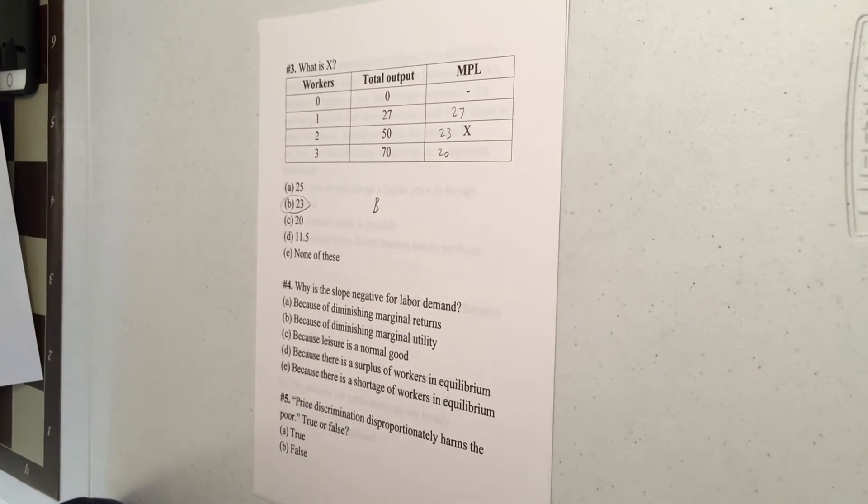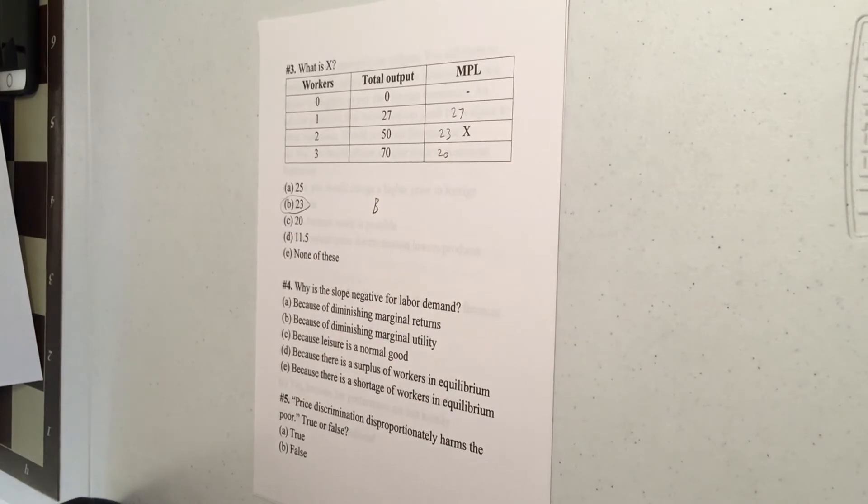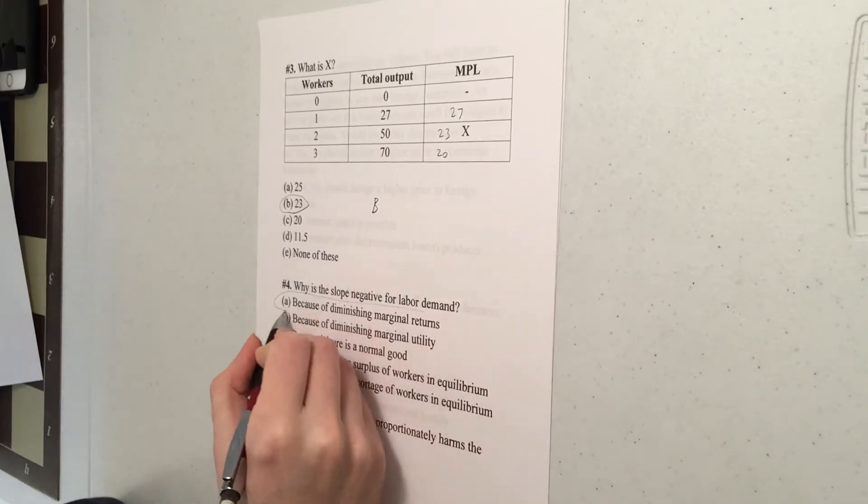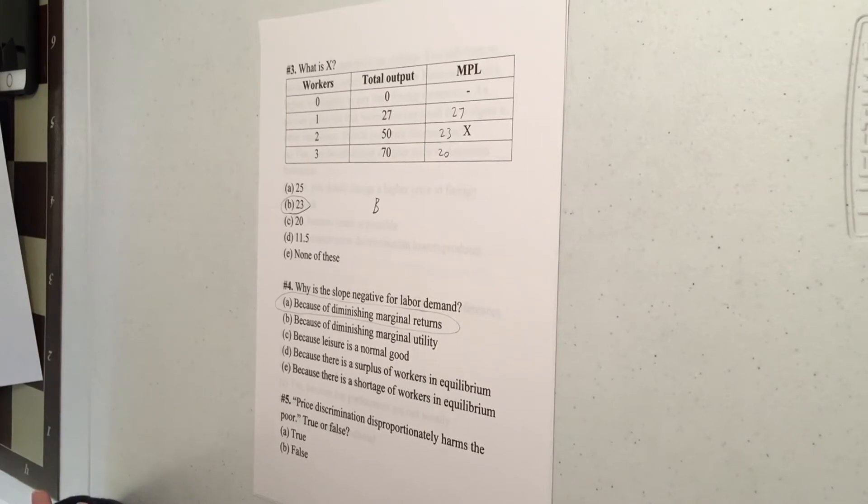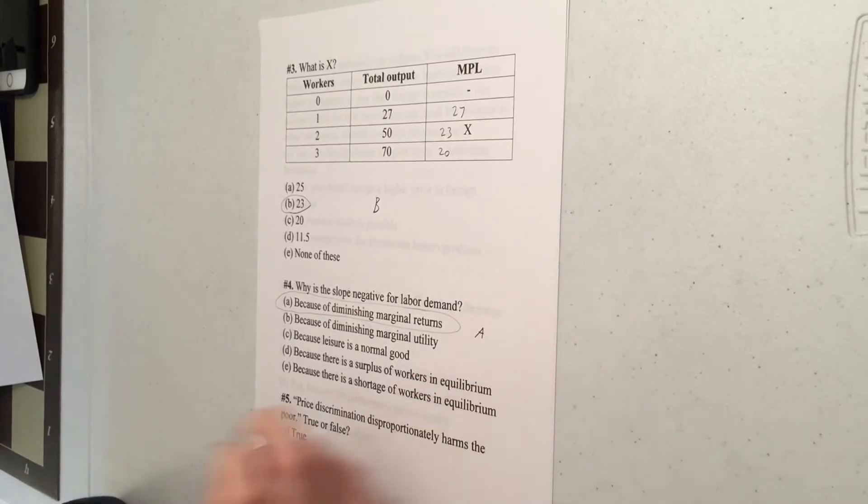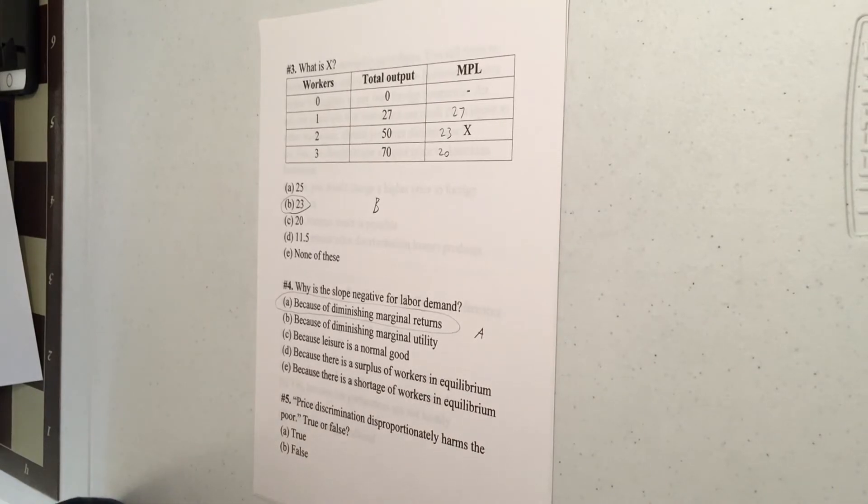So like I said, these are some of the easier questions in part one. Number four, why do you have a negative slope for labor demand? That comes from diminishing marginal returns. If you keep hiring more and more workers, then output goes up, but at a slower and slower rate. So the marginal product is diminishing and diminishing implies a negative slope for labor demand.